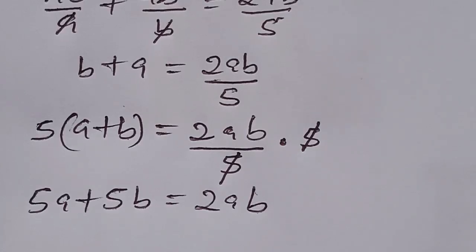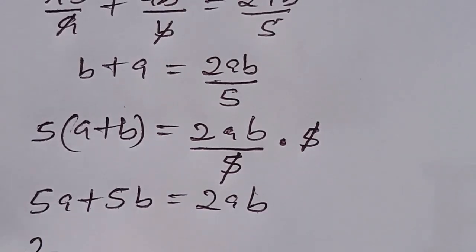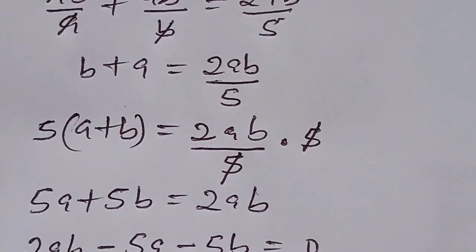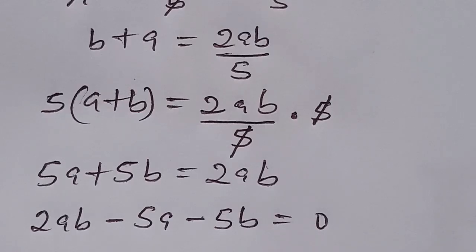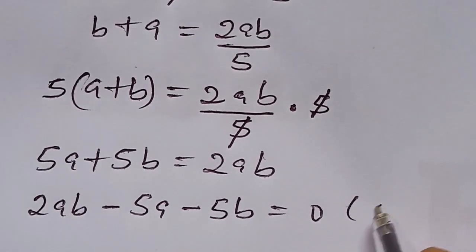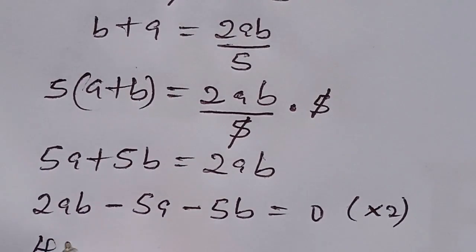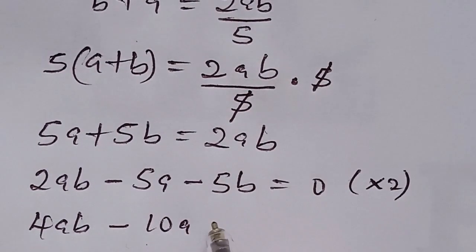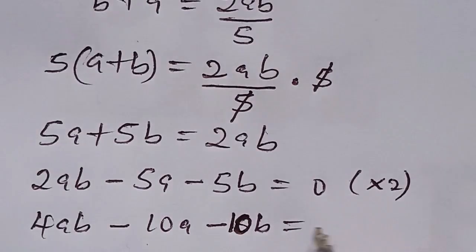Having done this, what we can now do is to move the left hand side to the right hand side, and that becomes 2ab minus 5a minus 5b, all equal to 0. Now let's multiply both sides by 2. We have 4ab minus 10a minus 10b equal to 0.